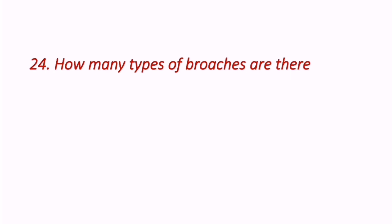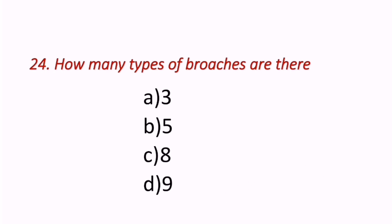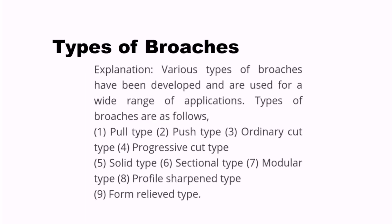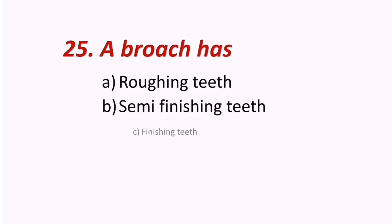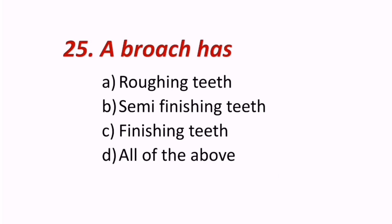Twenty-fourth question: How many types of broaches are there — three, five, eight, or nine? There are nine types, including pull type, push type, ordinary cut, progressive cut, up to form relief type. D is the correct answer. Twenty-fifth question: A broach has roughing teeth, semi-finishing teeth, finishing teeth, or all of the above? The correct answer is all of the above — a broach has roughing, semi-finishing, and finishing teeth.